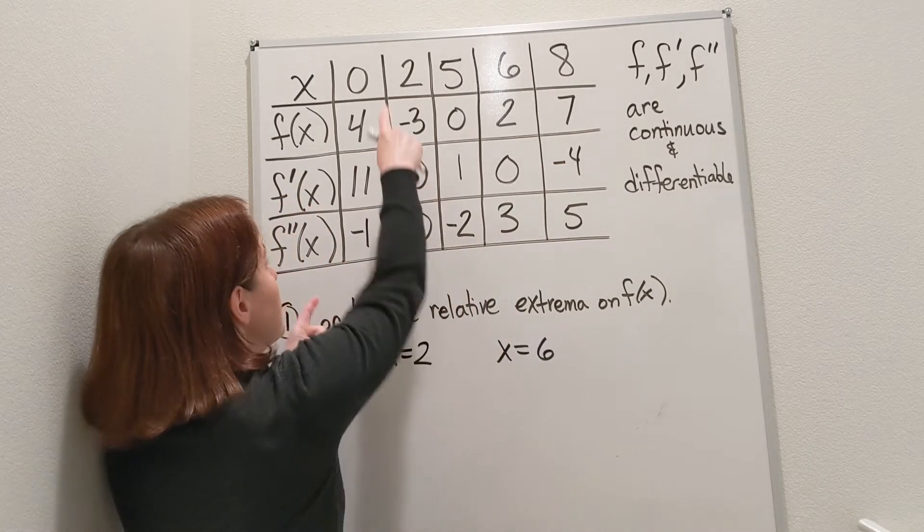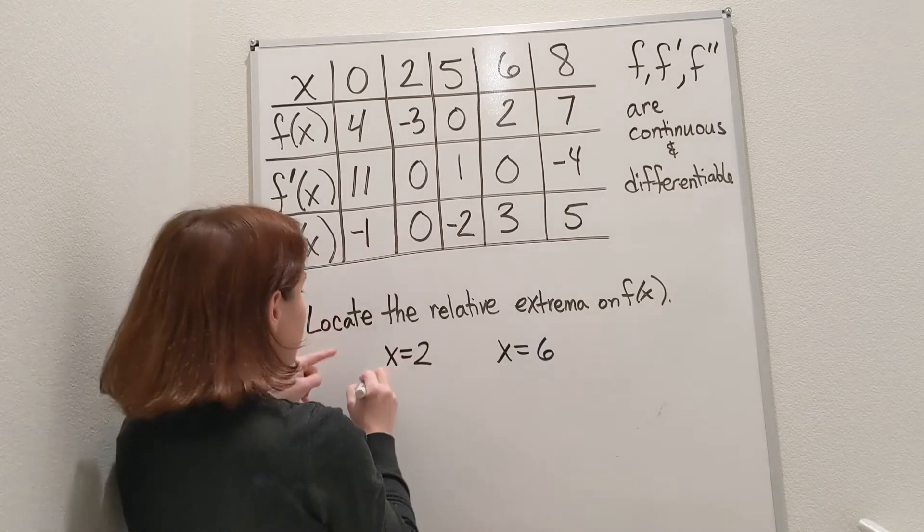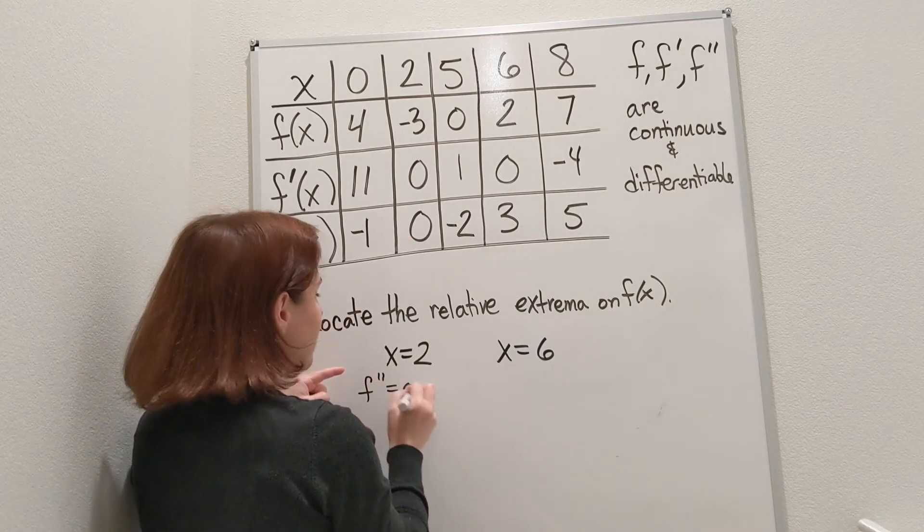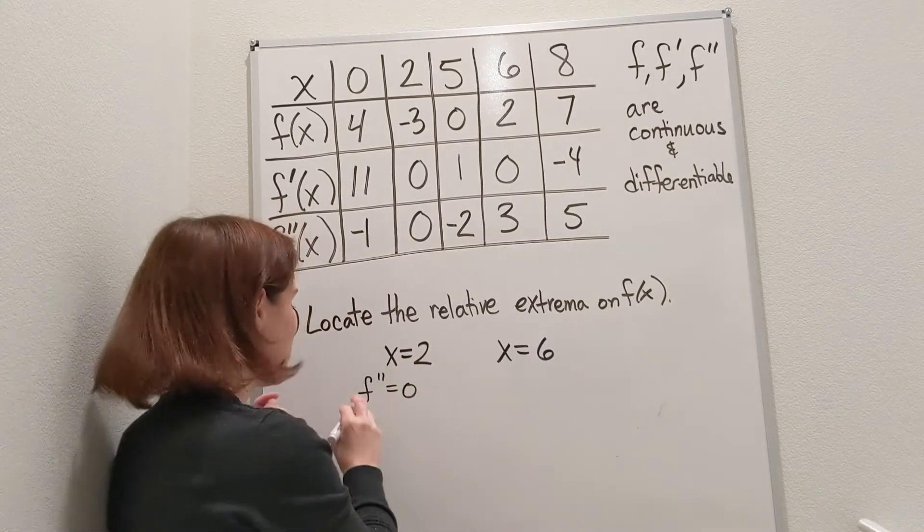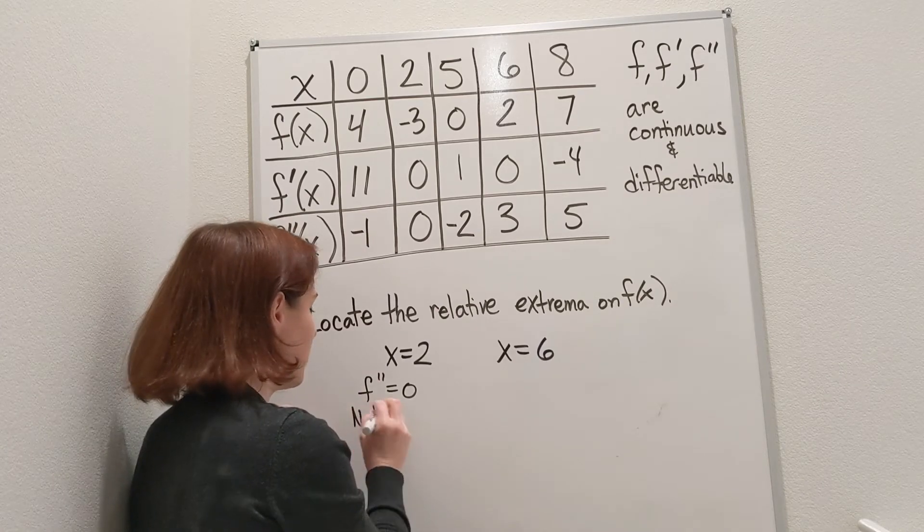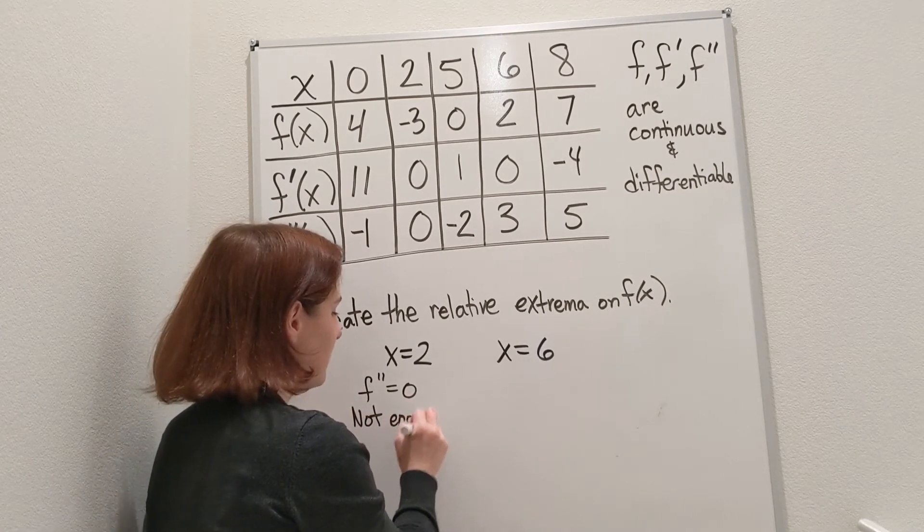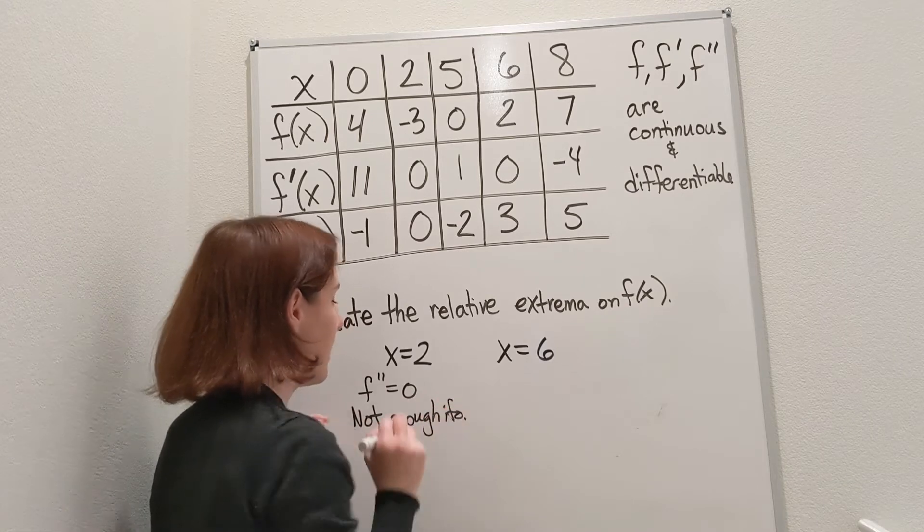But what I can do is the second derivative test. Here at x=2, the second derivative is zero. And if the second derivative is zero, there's just not enough information to figure out if it's a local max or a local min or neither. So we have not enough info there.